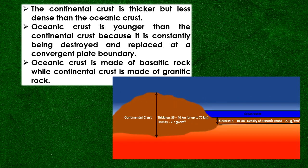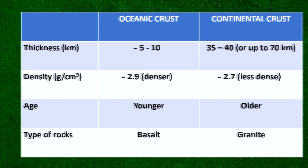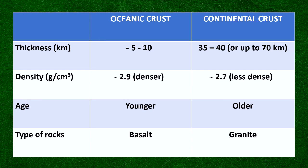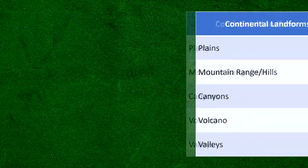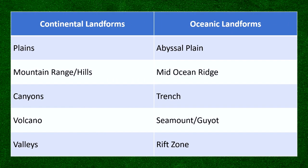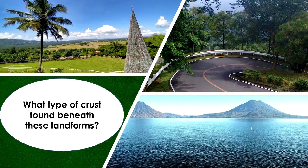Compare the characteristics of continental crust and oceanic crust. Listed in this table are some of the continental and oceanic landforms. Are you familiar with these landforms? Now look around you — what landforms do you see in your locality? What type of crust is found beneath this landform?